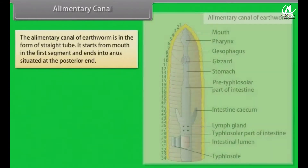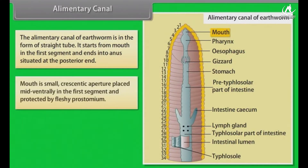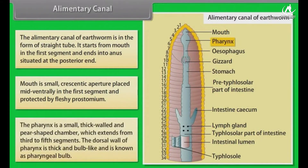Alimentary canal. The alimentary canal of earthworm is in the form of a straight tube. It starts from the mouth in the first segment and ends into the anus situated at the posterior end. The mouth is a small, crescentic aperture placed mid-ventrally in the first segment and protected by the fleshy prostomium. The pharynx is a small, thick-walled, pear-shaped chamber which extends from the third to fifth segment. The dorsal wall of pharynx is thick and bulb-like, known as the pharyngeal bulb.